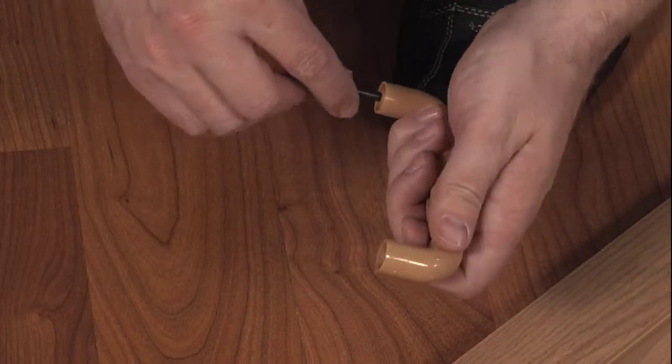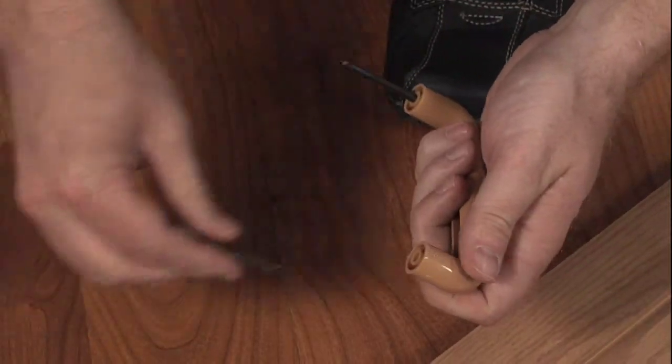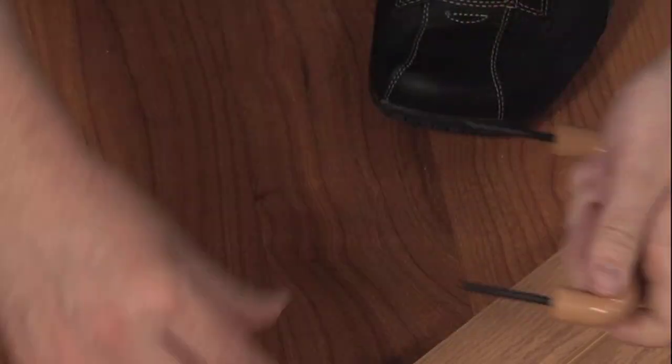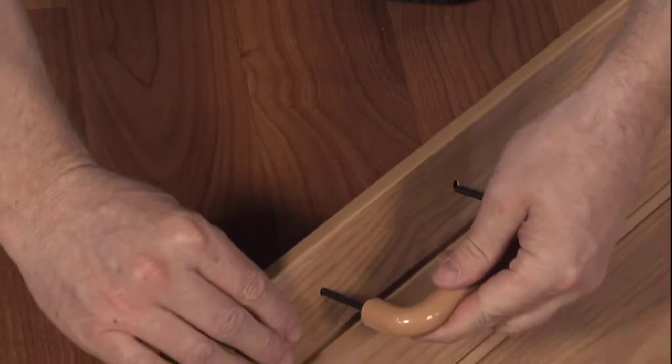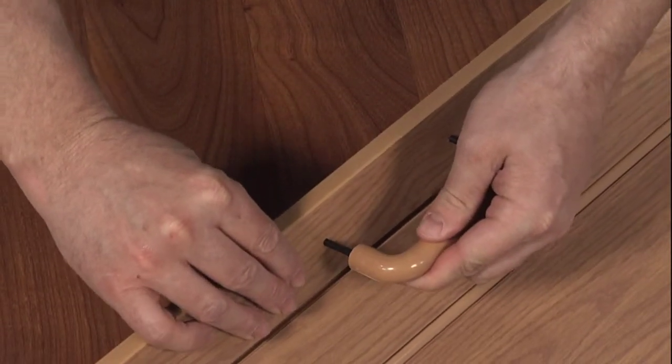Install the handles. Place the two handle attachment pins into one handle and then fit the pins through the door panel holes. Press the other handle onto the pins.